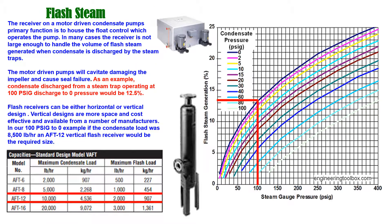When flash steam is condensed and discharged through a steam trap to a lower pressure, a portion of the condensate will flash into steam at the lower pressure. As shown in red on the chart, steam at 100 psig will generate about 12.5% flash steam at atmospheric pressure.